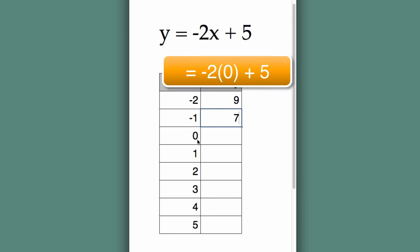If we put 0 in for x, that negates that term, and all we're left with is 5. If you see a pattern here, you're correct. As we increase x by 1, y decreases by 2. So the next value here is 3, 1, minus 1, minus 3, minus 5.